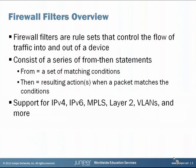Firewall filters are a set of rules that control the flow of traffic into and out of a device. Generally they consist of a set of from and then statements. The from portion is a set of matching conditions and the then portion is the resulting action that happens when a packet matches against those conditions. Firewall filters on Junos-based devices are supported for a variety of protocols — IPv4, IPv6, MPLS, and so on, and there are more than are listed here as well.